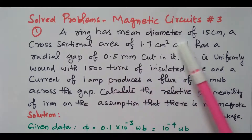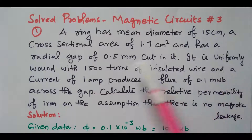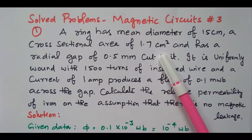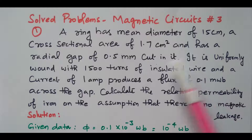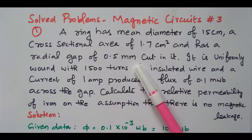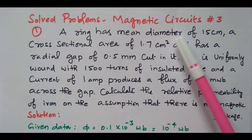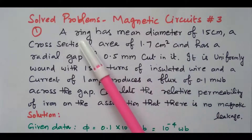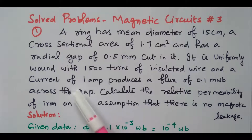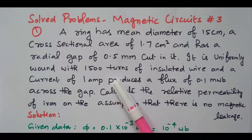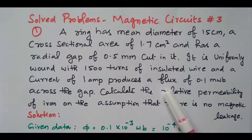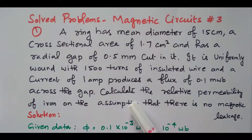A ring has a mean diameter of 15 cm and a cross-sectional area of 1.7 cm². It has a radial air gap of 0.5 mm cut in it. It is uniformly wound with 1500 turns of insulated wire, and a current of 1 ampere produces 0.1 mWb across the air gap. Calculate the relative permeability of the iron, on the assumption that there is no magnetic leakage.